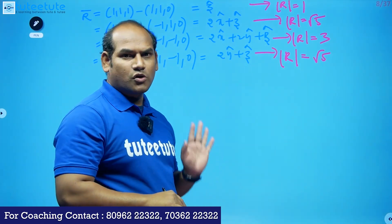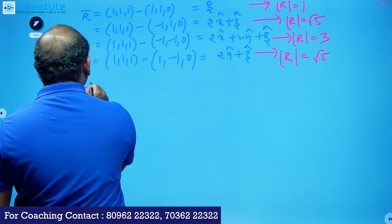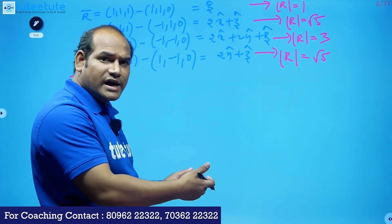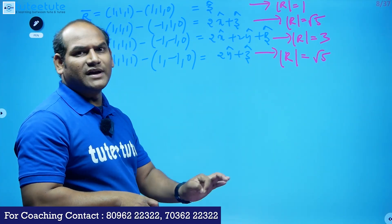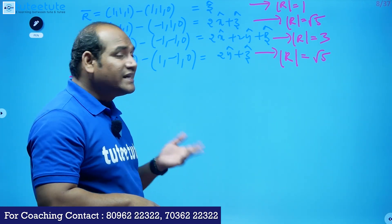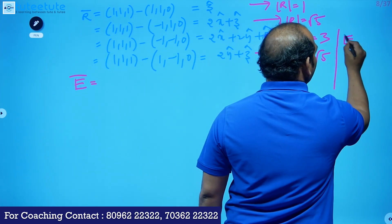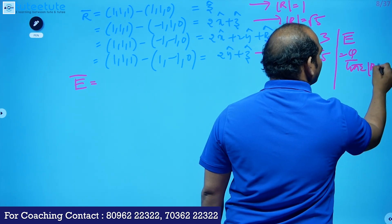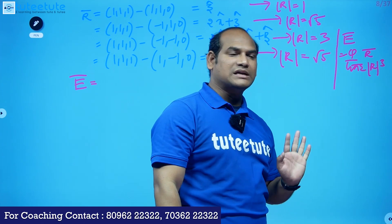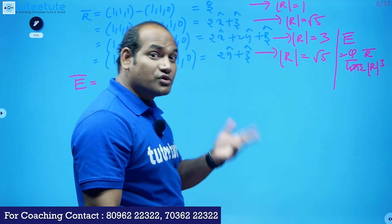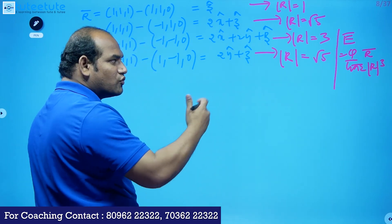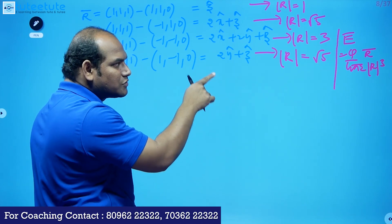The electric field formula can be rewritten as E = (q/4πε) × (r̄/|r|³). Everywhere q and 4πε are constant; only r̄/|r|³ changes from point to point. Since 1/4πε₀ = 9×10⁹ and εᵣ = 2, the constant factor becomes q/(4πε₀εᵣ) = (3×10⁻⁶ × 9×10⁹)/2.